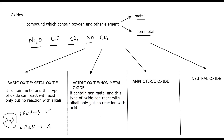How can you identify whether the element present with oxygen is a metal or non-metal? You will check the group in the periodic table — the periodic table will be there in the exam. Group one, group two, group three, and transition metals are metals. Another type of metals is called transition metals, which we will discuss in the next chapter on the periodic table.